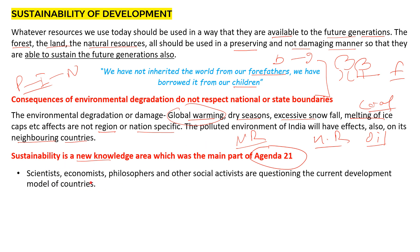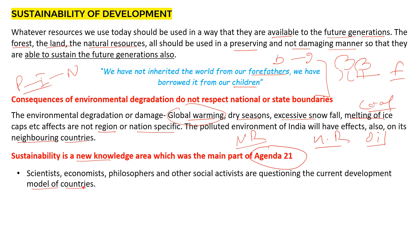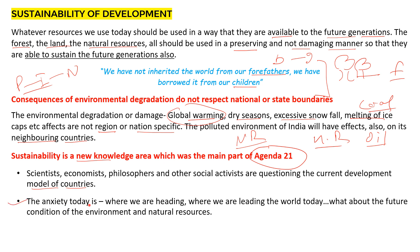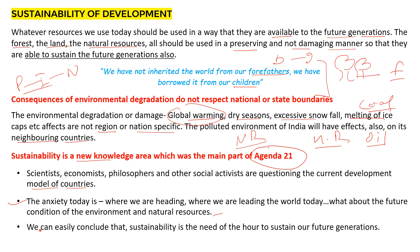Scientists, economists, philosophers and other social activists are questioning the current development model of countries. People are anxious about the way natural resources are being used. Questions looming large today include: where are we heading, where are we leading the world, and what about the future condition of the environment and natural resources? This is the need of the hour — that sustainability should be made part of our use of natural resources so that future generations also get the natural resources that we are using today.